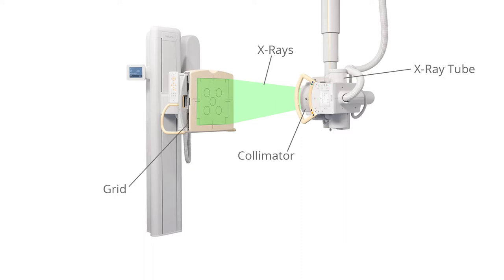The Bucky Potter grid may be placed between the patient and the image detector to reduce the quantity of scattered x-rays reaching the detector. The image detector is what collects the x-rays that went through the patient to form the image.